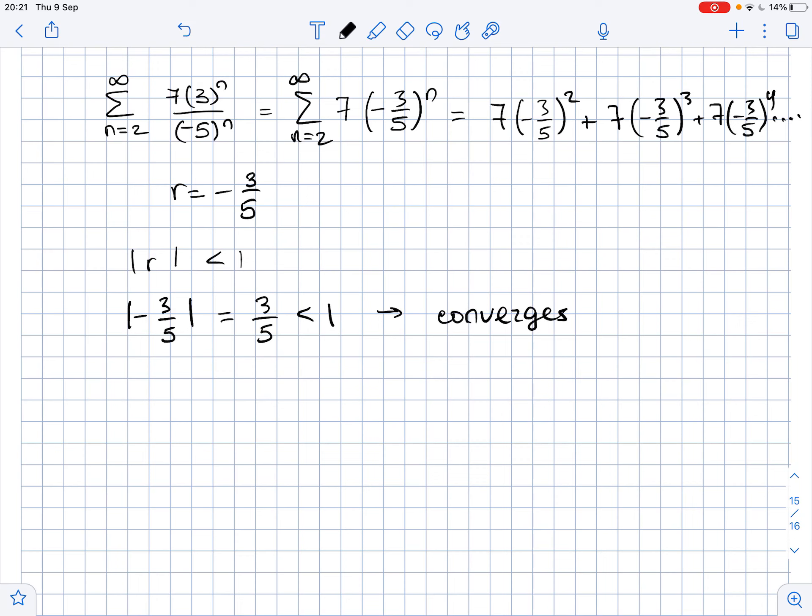To find the sum of the series, we use the formula for the sum of an infinite geometric series: S equals a over 1 minus r, where a is the first term. In our case, the first term is 7 times (negative 3 over 5) squared, divided by 1 minus the common ratio, which is minus negative 3 over 5.